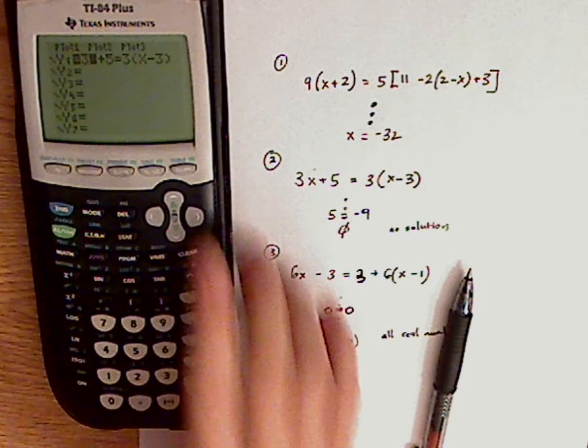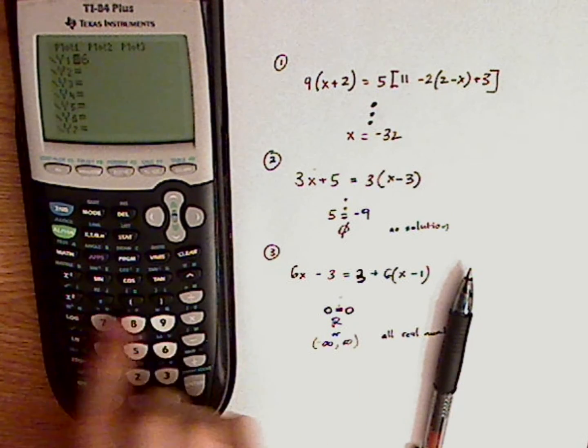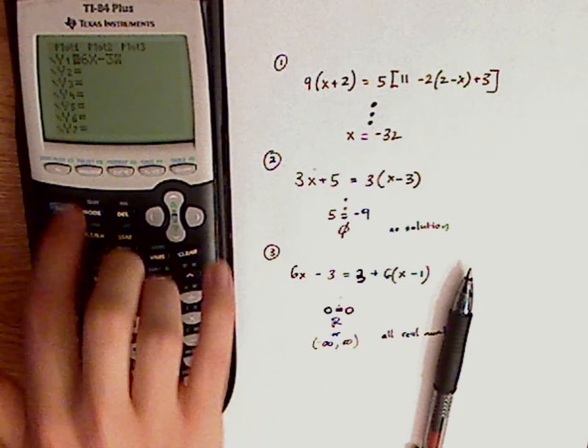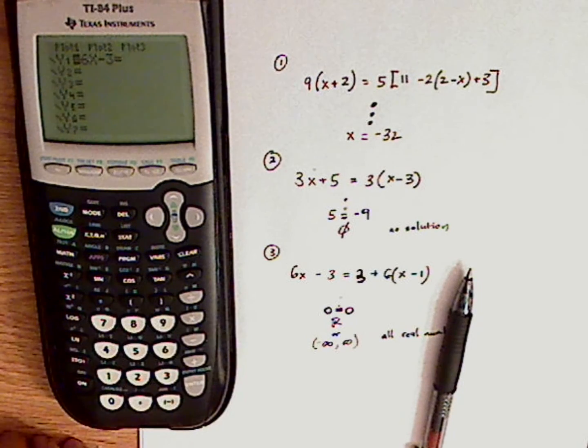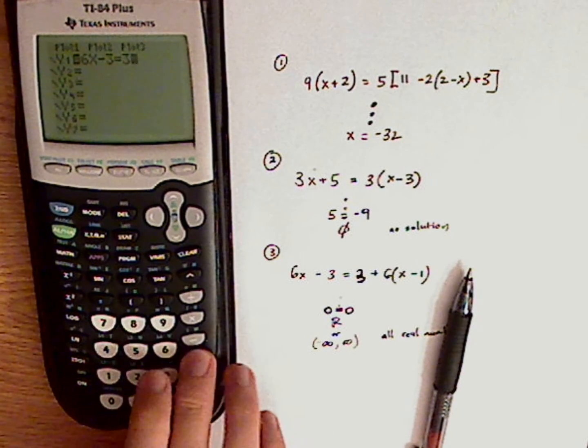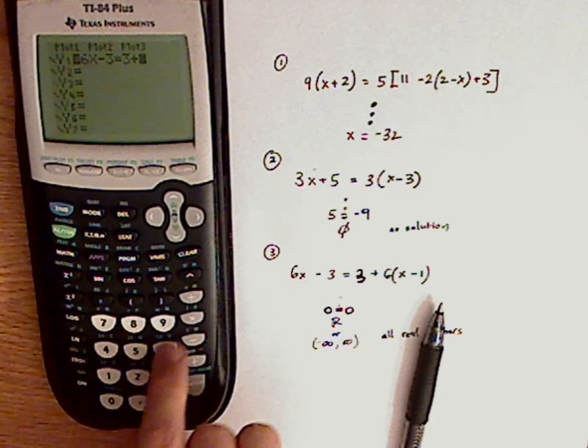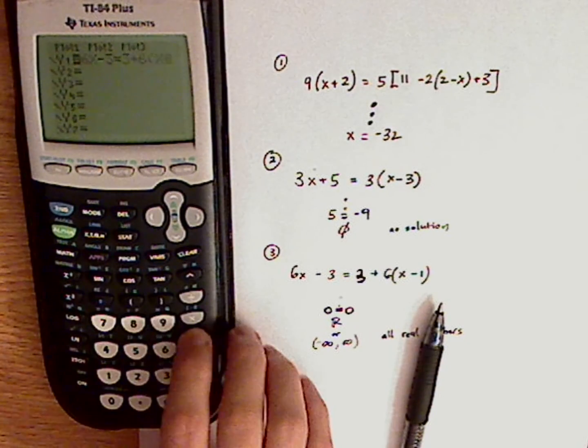Let's clear this. You have 6x minus 3 equals. So I need to go back to test. Equals 3 plus, yeah it's supposed to be a 3, 6 parentheses x minus 1.